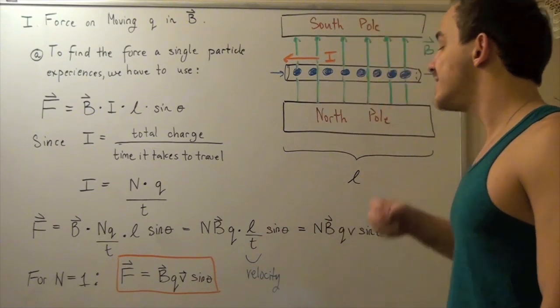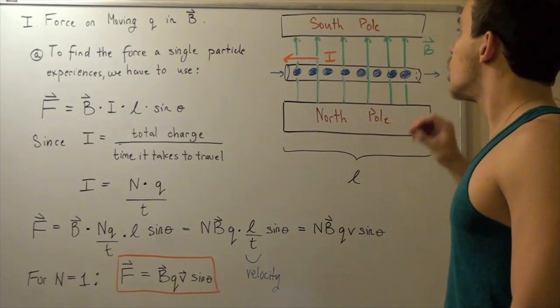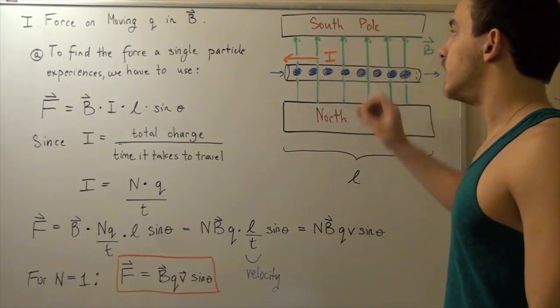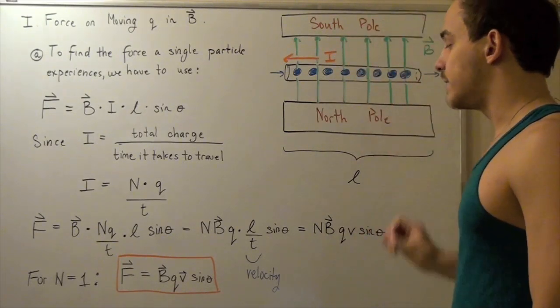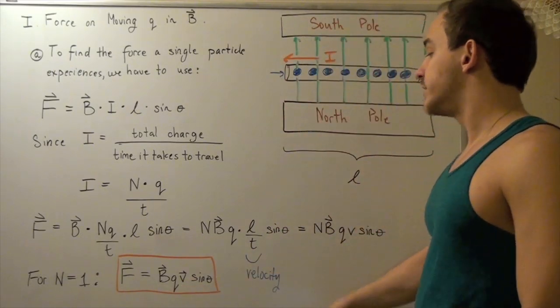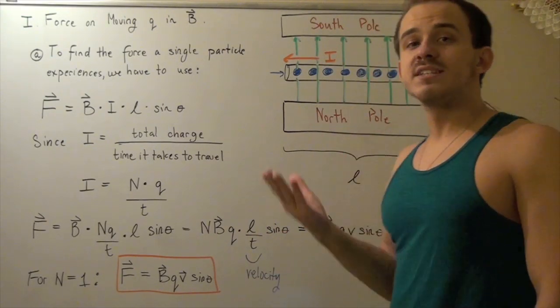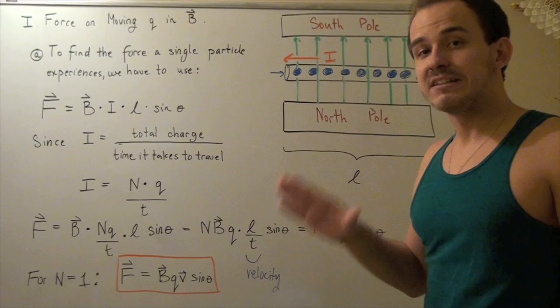Theta, in this case, is simply the angle that the velocity vector of this particle makes with our magnetic field that's created by our magnet. And this gives us the magnitude of that particle. To find direction of that particle, the force that our particle feels, we once again have to use our right-hand rule.